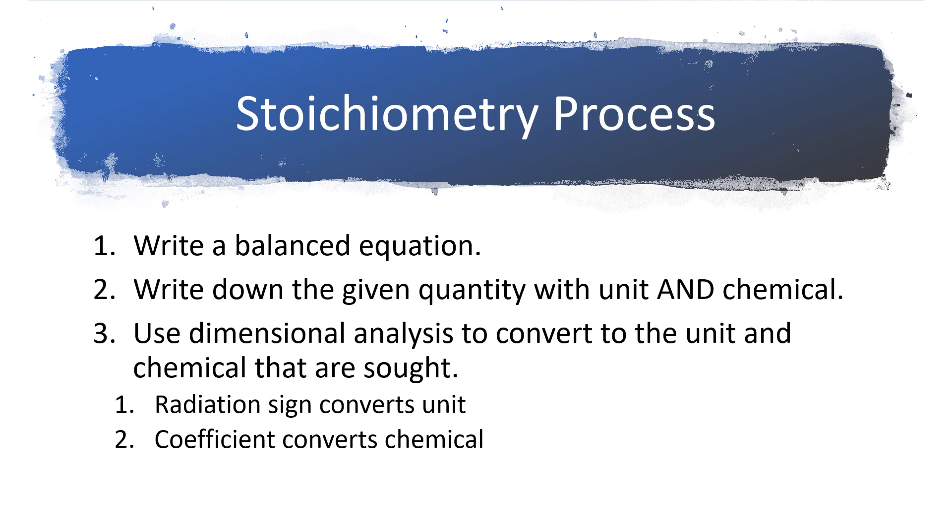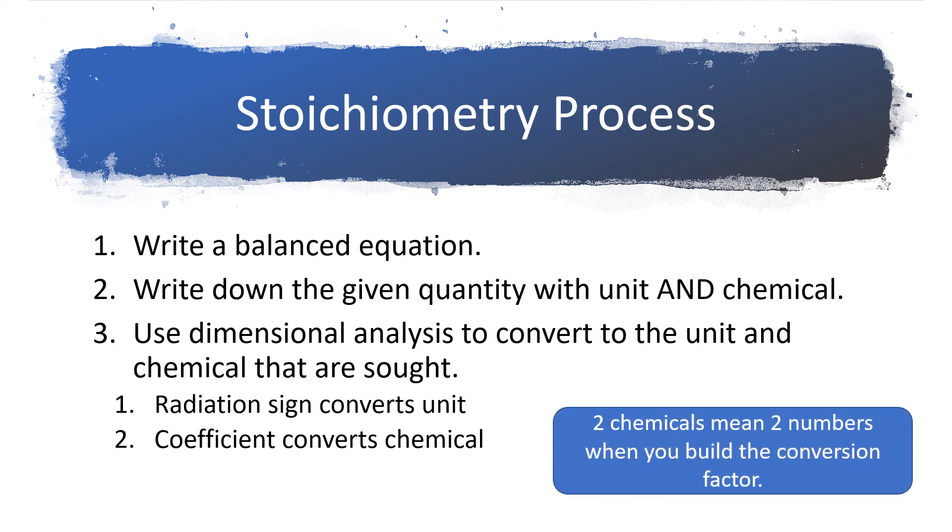Before we work a bunch more examples, I just wanted to kind of outline the process for stoichiometry. First, you have to have a balanced equation. Without the coefficients, you can't do stoichiometry. Next, read the problem carefully and figure out what number we're given with its unit and the chemical. So we write down that number, we stick it over one, and then we're going to multiply by a conversion factor. If we have two different chemicals, we're going to have to put two different numbers into that conversion factor. One of them comes from the radiation sign, and the other comes from the coefficient in the balanced equation. Those two numbers are basically performing two different types of conversions. The number off the radiation sign is going to convert the unit for us. So it might convert grams to liters. The coefficient is what maintains the correct ratio of one chemical to another chemical. So essentially, the coefficient converts the chemicals.